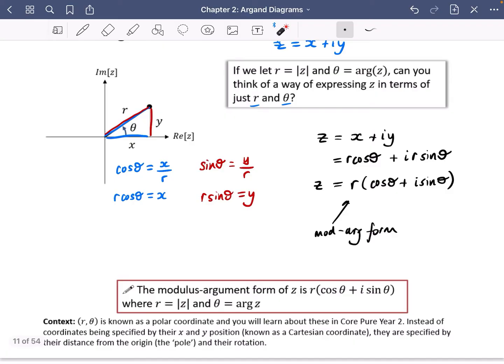The modulus argument form of z is r(cos theta + i sine theta), where r is the modulus and theta is the argument. This little coordinate pair r, theta is actually a polar coordinate, and you're going to learn about these in core pure year two. Instead of coordinates being specified by their x and y position, they are specified by their distance from the origin, which is called the pole, and their rotation. This is a whole other way of thinking about geometry in maths, and this is starting to link complex numbers to some other areas as well.